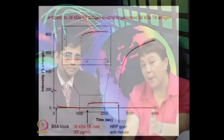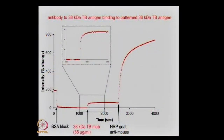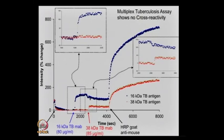If you look at the second spot, which is filled with the 38 kilodalton TB antigen, you can do the same experiment. We'll put them together — two spots together. At this point we introduced the 16 kilodalton TB antibody, and one of the spots got more intense while the other did not. Then we introduced the 38 kilodalton antibody, and the other spot got more intense. Then we amplified both spots — the blue one is 16 kDa and the red one is 38 kDa. It is able to measure both simultaneously.